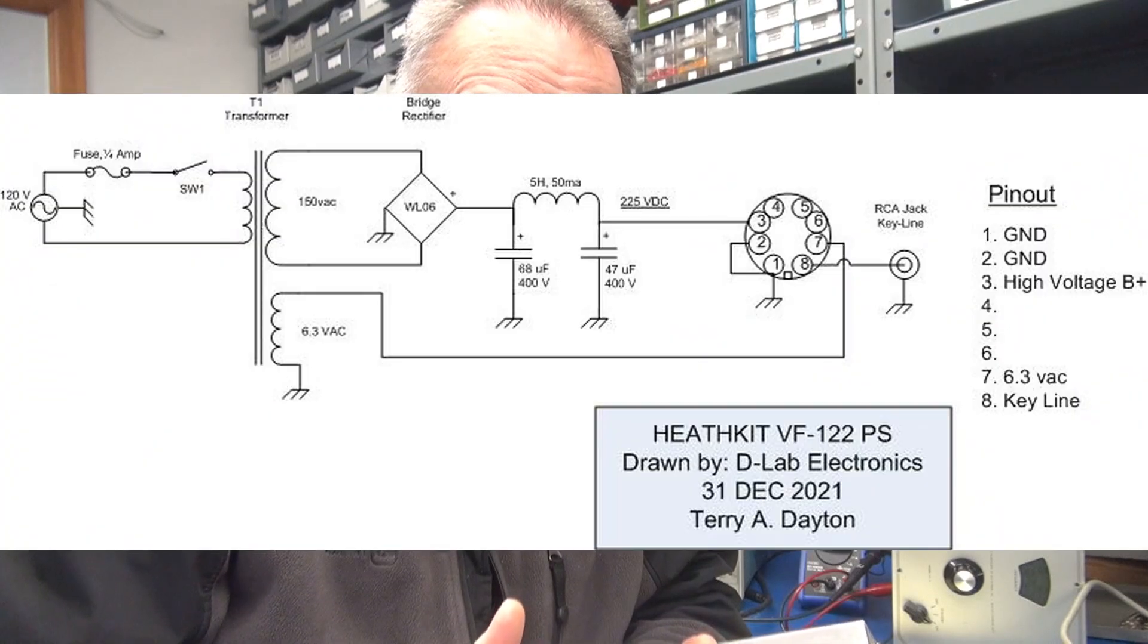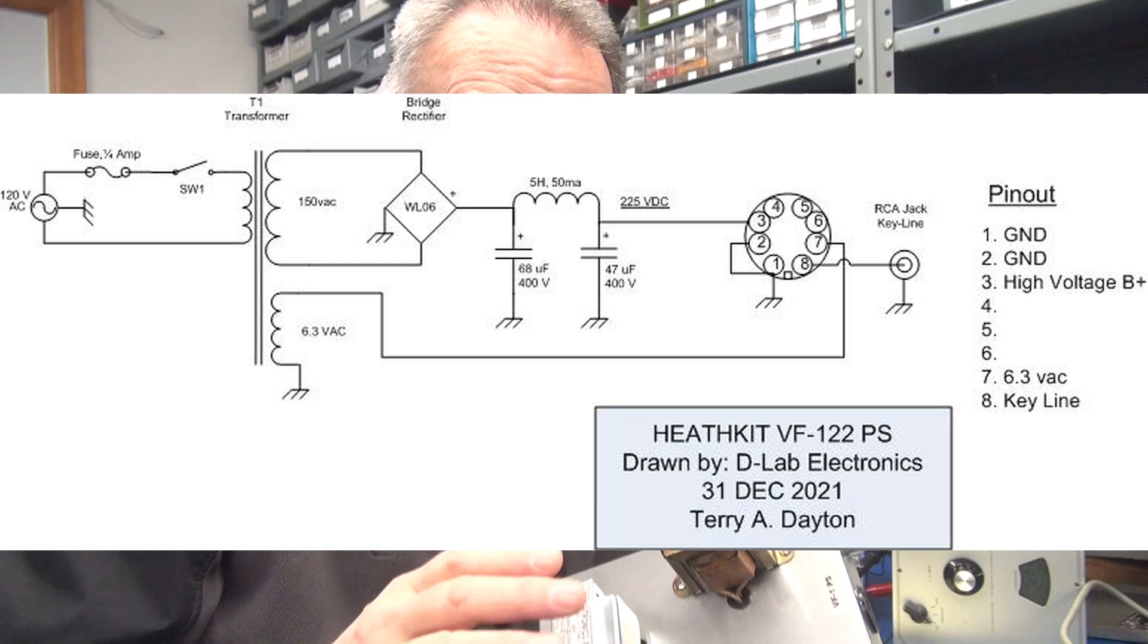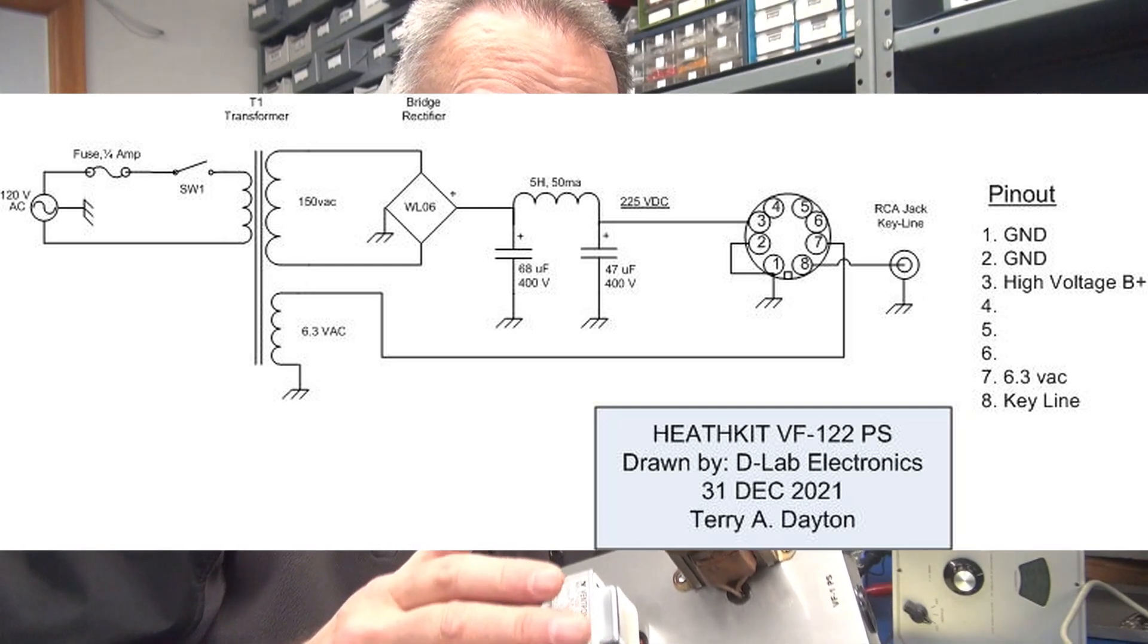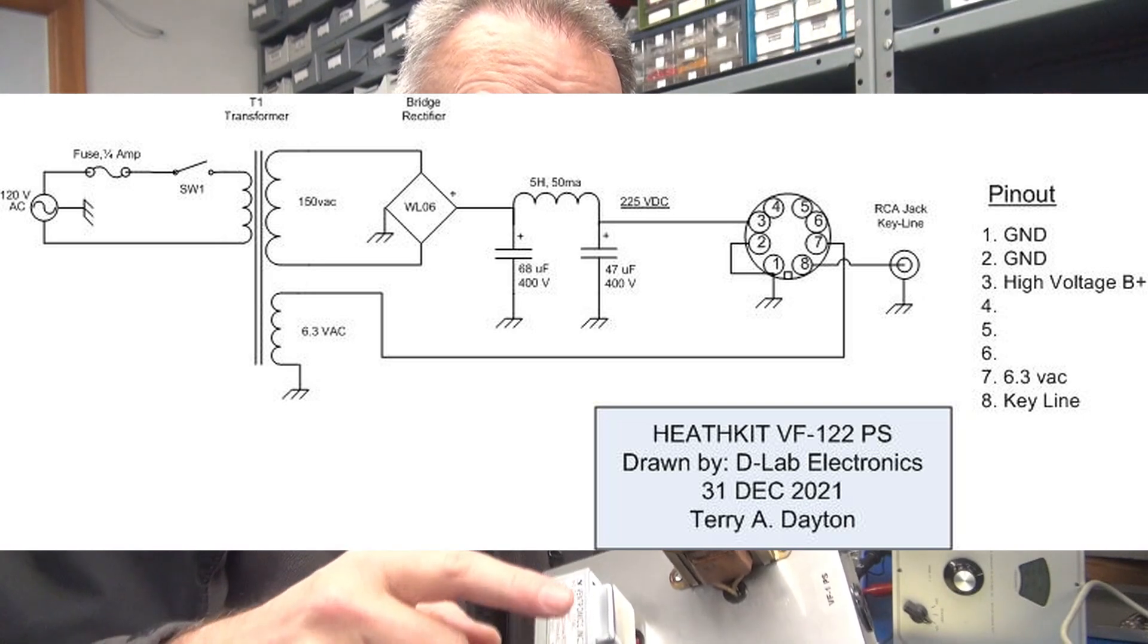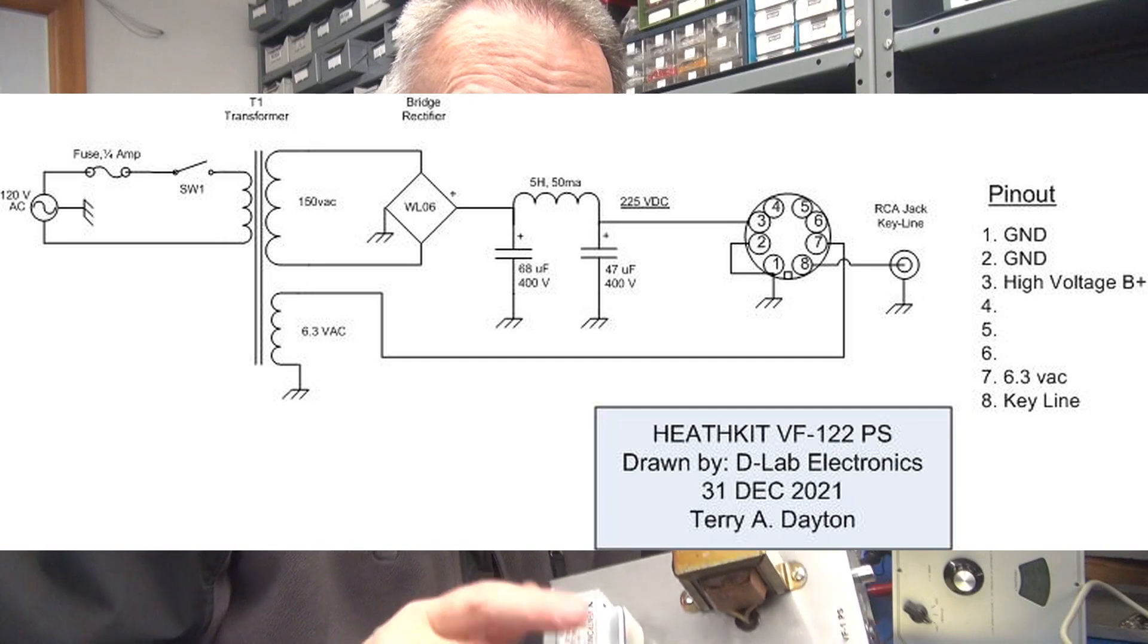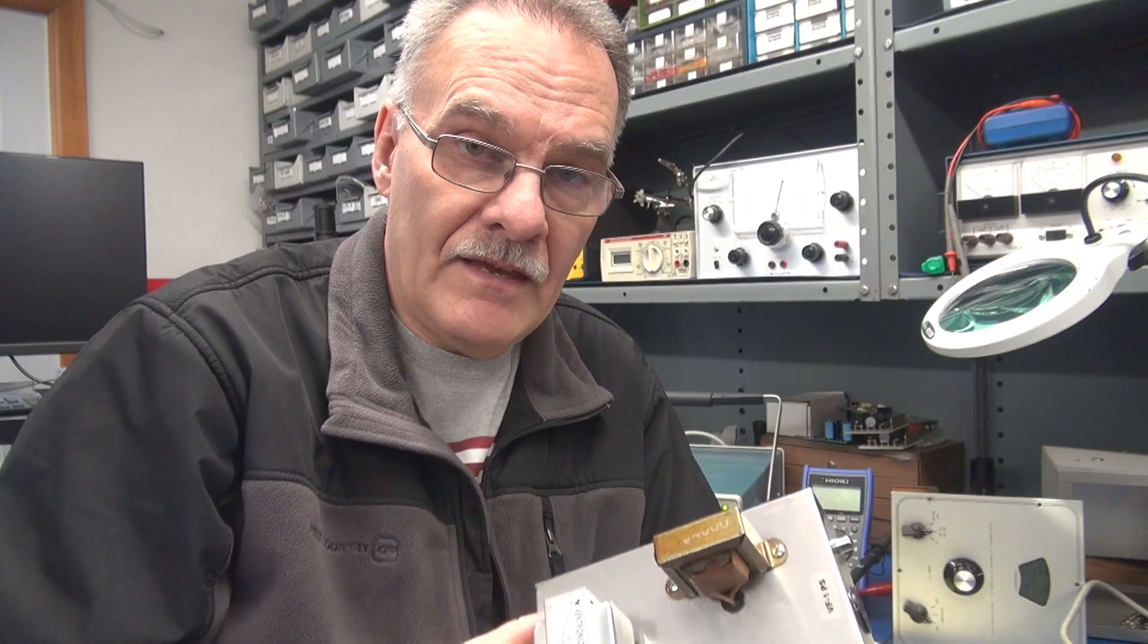Let's cut to the schematic now for the Johnson VF122 VFO. You can see that the actual circuitry is identical. You just change the pinout of the 8-pin octal socket for that VFO.